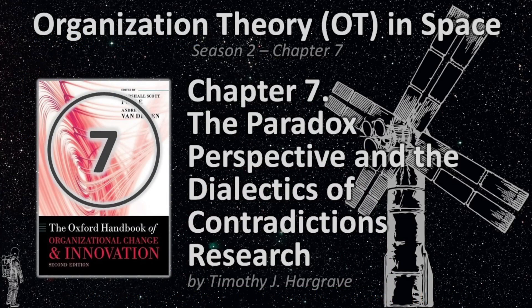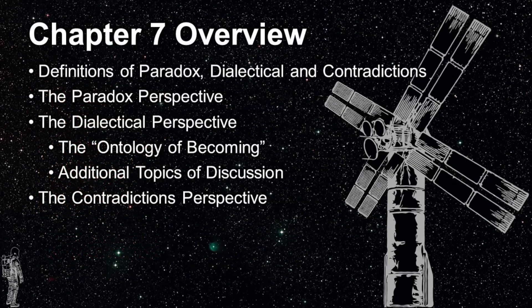This video covers Chapter 7 of the handbook, entitled The Paradox Perspective and the Dialectics of Contradictions Research by Tim Hargrove. In this chapter, we'll start with some basic definitions of the terms, then go into detail about the paradox perspective. We'll dive into the dialectic perspective, also covering the ontology of becoming, and other interesting topics. Finally, we'll briefly describe the contradictions perspective.